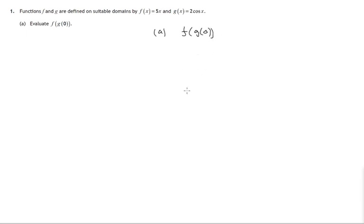So first of all we can calculate what g of 0 is. Now if we look at the function g and say what happens when we put a value into g, well out comes 2 times the cosine of that value. So for instance if we put 0 in, out would come 2 times cos 0.